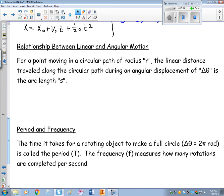There is a relationship between the linear and angular motion. I call this the bridge. For a point that's moving in a circular path with some sort of radius r, the linear distance traveled along that circular path during the angular displacement is the arc length. So that means theta equals arc length divided by radius. I can rewrite this. I can say that s equals r times theta.